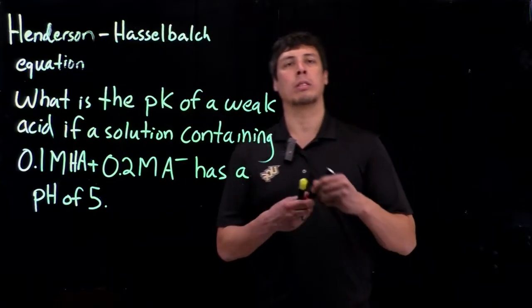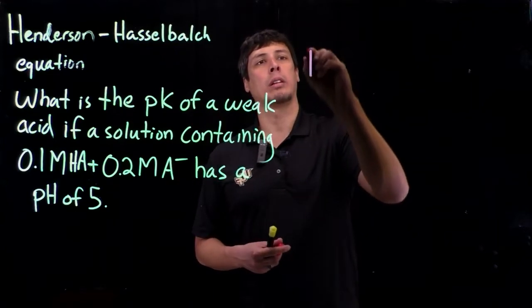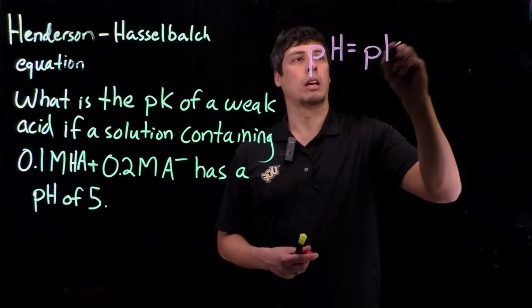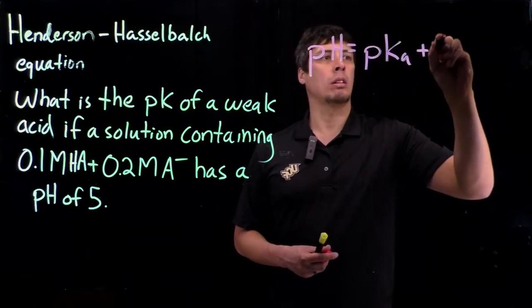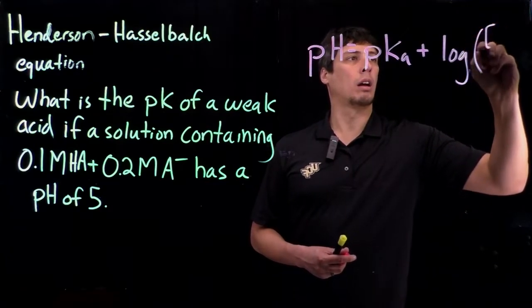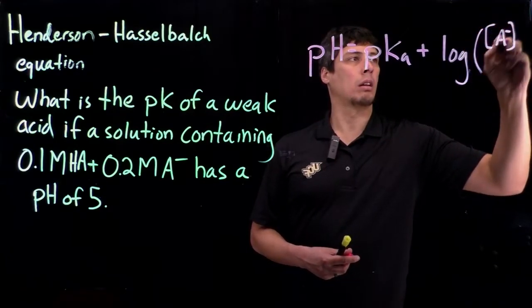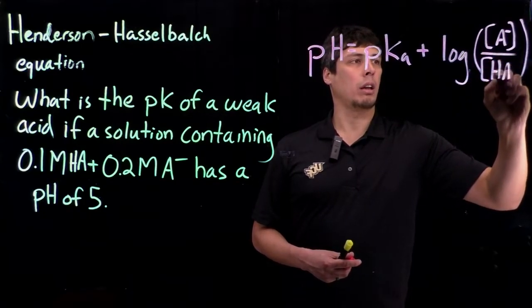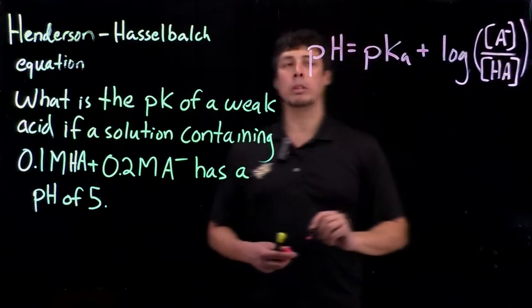Okay, so let's look at our equation, let's write it down. Henderson-Hasselbalch pH equals pK plus log of A- over HA. Is that on the board? Okay, good.